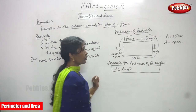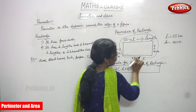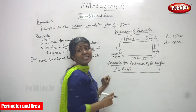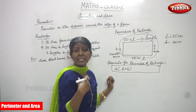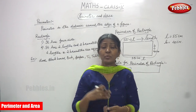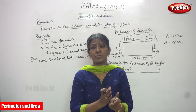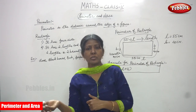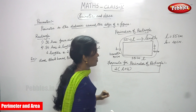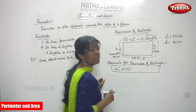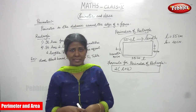This is L and this is also L — two lengths are equal, so the value of length is 55 centimeters. Similarly, breadth is 40 centimeters and again breadth is 40 centimeters. Two lengths and two breadths are always equal — that is the property of a rectangle. So here we have length 55 cm, length 55 cm, breadth 40 cm, and breadth 40 cm. Don't forget the properties of a rectangle.